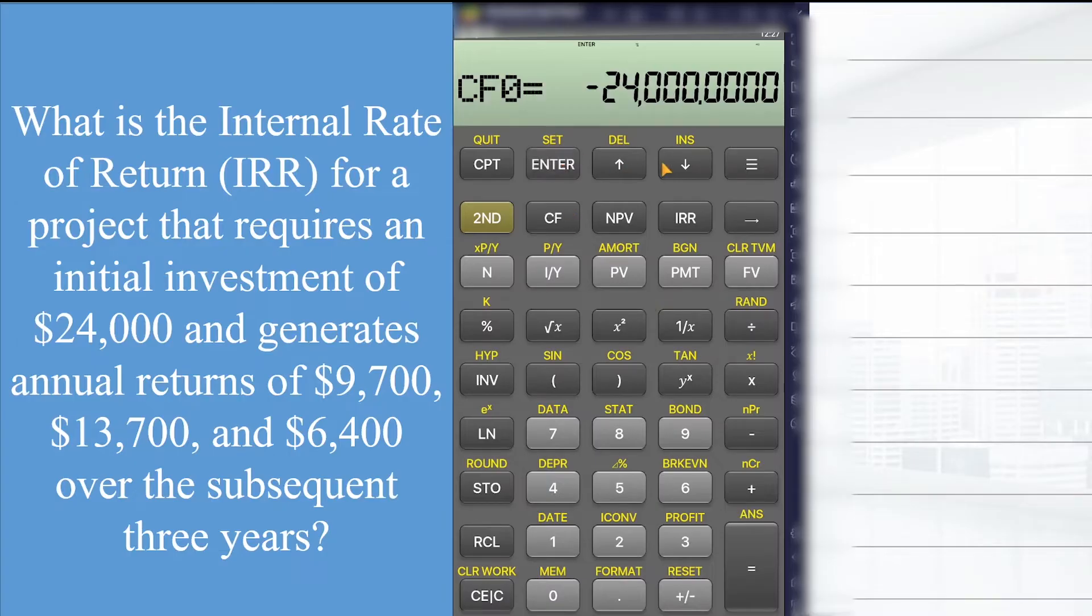And then click downward arrow, insert CO1, that is the cash flow one. That is $9,700, enter.